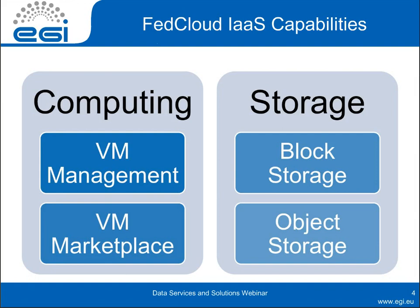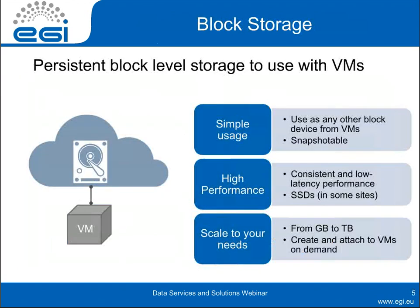In this slide I want to show a very brief summary of the main capabilities of the infrastructure as a service. On the one hand we have the computing part, where we have VM management and the virtual machine marketplace where you can browse and select what kind of virtual machines to run. And then on the other hand we have the storage, which I will talk about today: block storage and object storage.